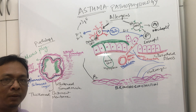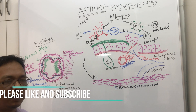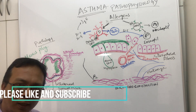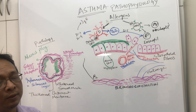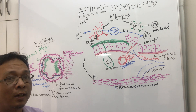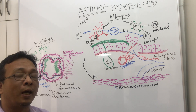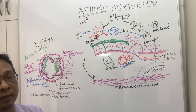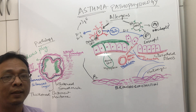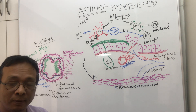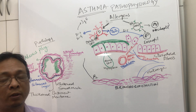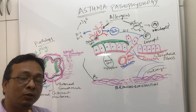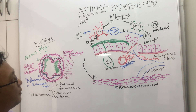This is the pathophysiology of bronchial asthma. Bronchial asthma is defined as airway hyper-responsiveness with bronchial constriction, and it is relapsing. It is a long-term or chronic condition, and it is also a reversible condition.